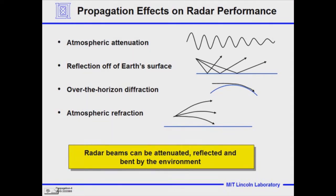Secondly, that beam will interact if the radar is close to the surface. Some of the energy will go out straight to the target, but some of the energy in the lower reaches of the beam — the lower angular portions — will reflect down onto the Earth's surface, bounce back up, and what you'll have interacting with the target is a mixture of that direct path and what we call the multi-path.